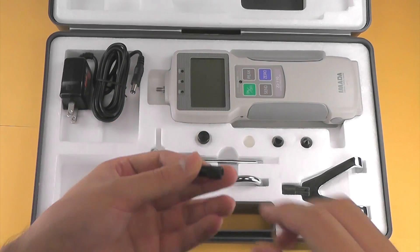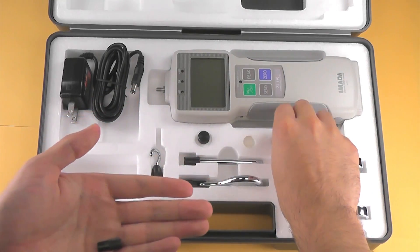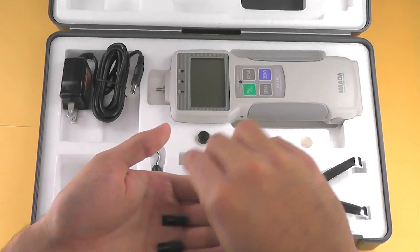The Z2 and ZP force gauge kits also include a chisel tip, conical tip, and notched tip attachments.